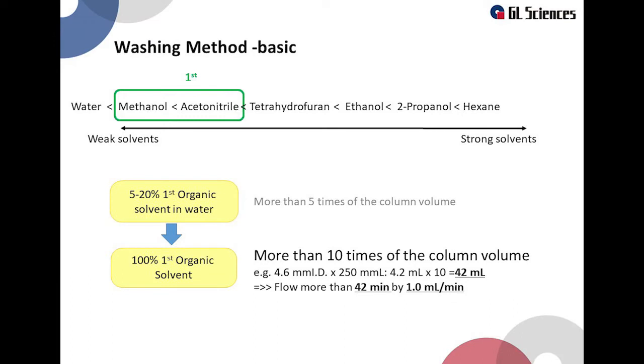After washing with a mixture of water and organic solvent, wash the column with 100% organic solvent. The volume to use is more than 10 times the column volume. For example, a column with an inner diameter of 4.6 mm and a length of 250 mm has a column volume of 4.2 ml. The washing solution to be used must be 42 ml or more.